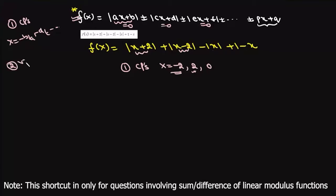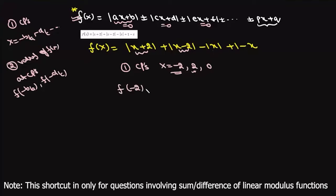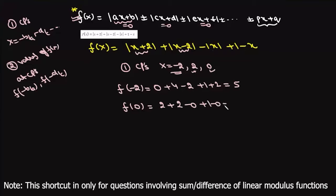The second step is to find the value of f(x) at each critical point. We find f(-2): |0| + |-4| - |-1| - (-2) = 0 + 4 - 1 + 2 = 5, so f(-2) = 5. Next, f(0): |2| + |-2| - |1| - 0 = 2 + 2 - 1 = ... wait, that gives 5, so f(0) = 5. Then f(2): |4| + |0| - |3| - 2 = 4 + 0 - 3 - 2 = ... simplified to 1, so f(2) = 1.